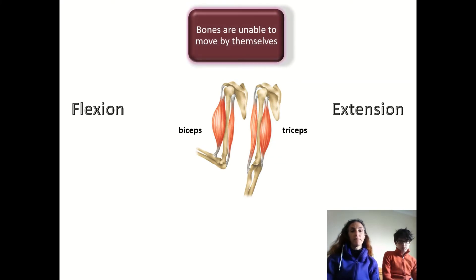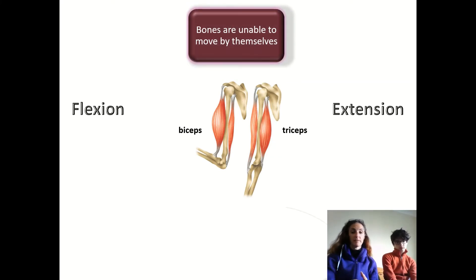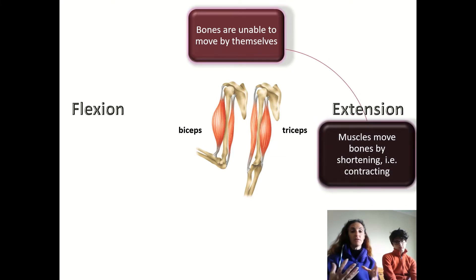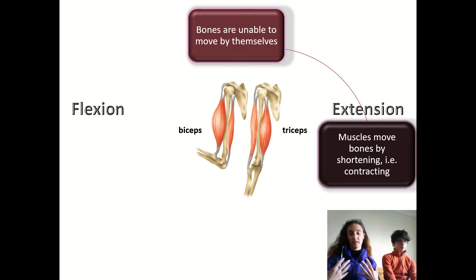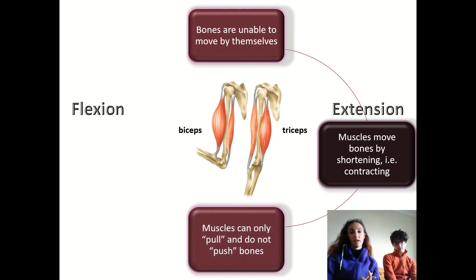So bones are unable to move by themselves. Muscles move the bones and they do this by shortening — and we call this contracting, like a muscle contraction. And muscles can only pull the bones; they're not able to push bones.